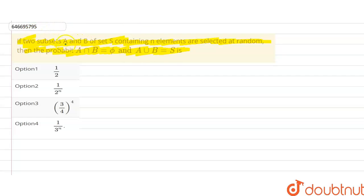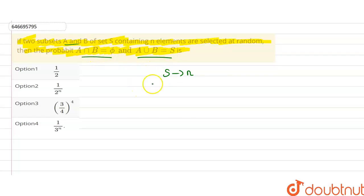So we have two subsets A and B of set S containing n elements. The probability that A intersection B is phi and A union B is equal to S. S is a subset that contains n elements, so it can have 0, 1, 2, 3, up to n elements.